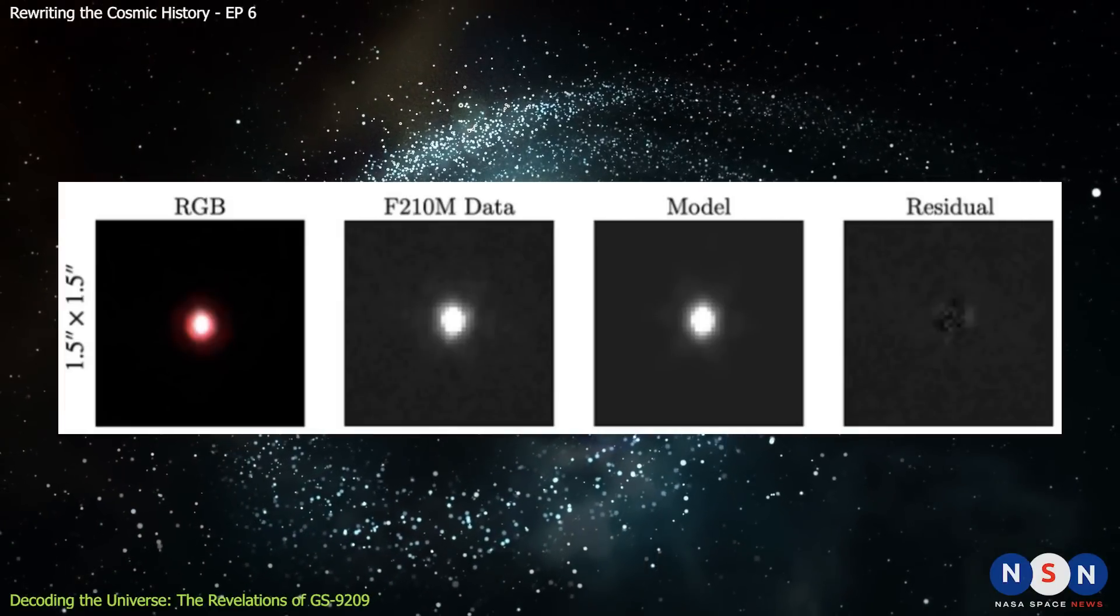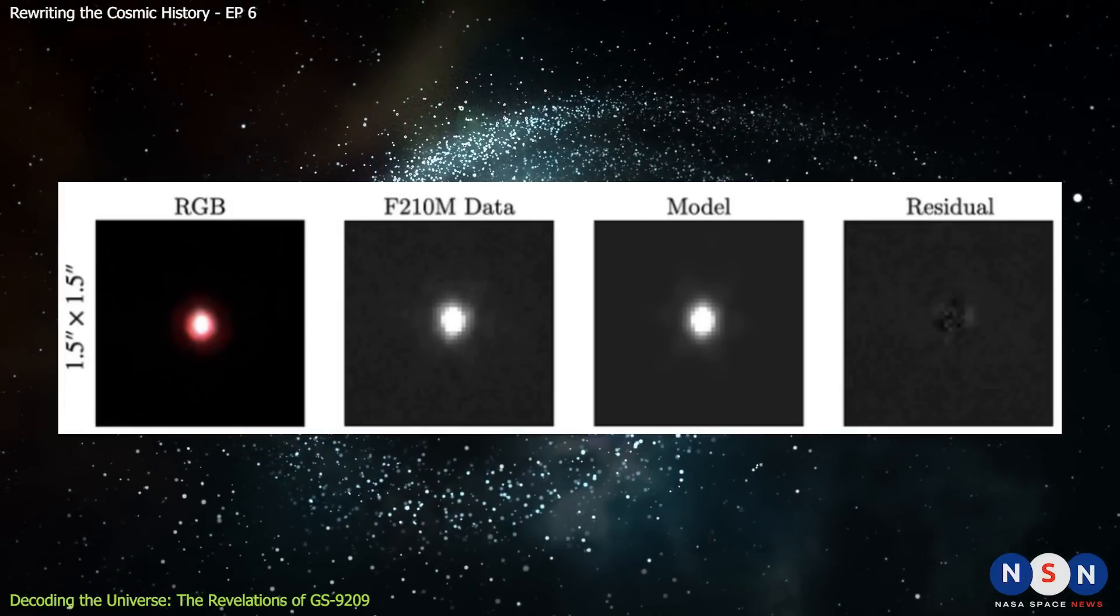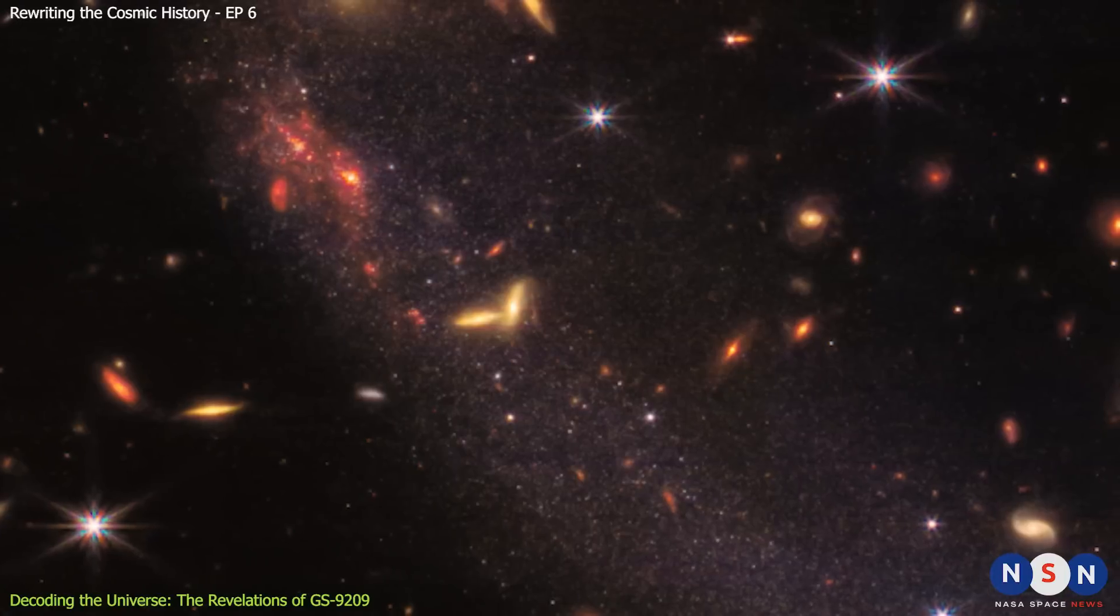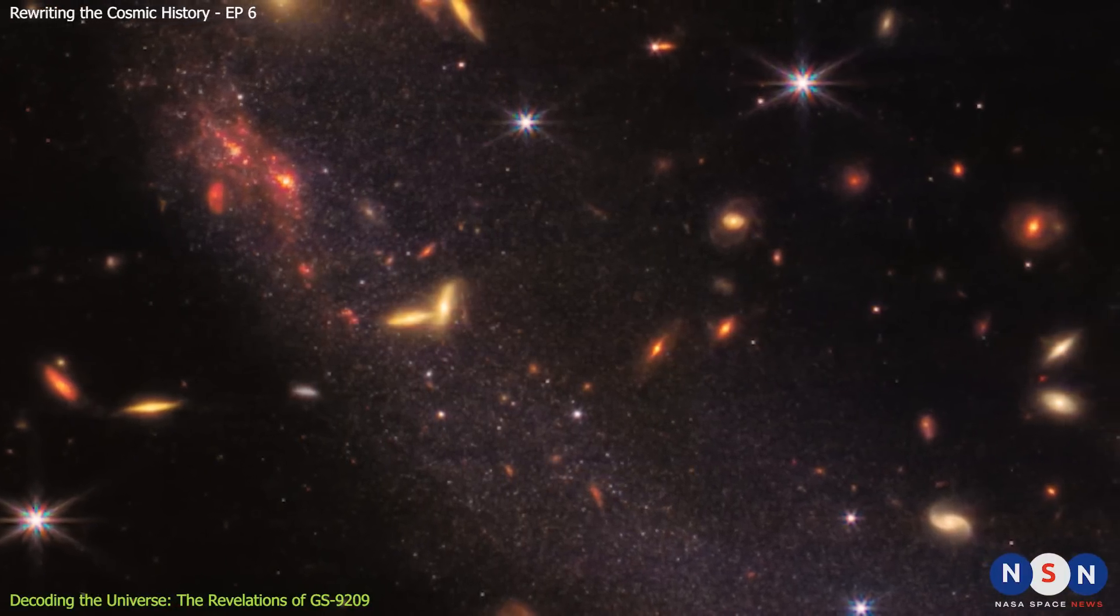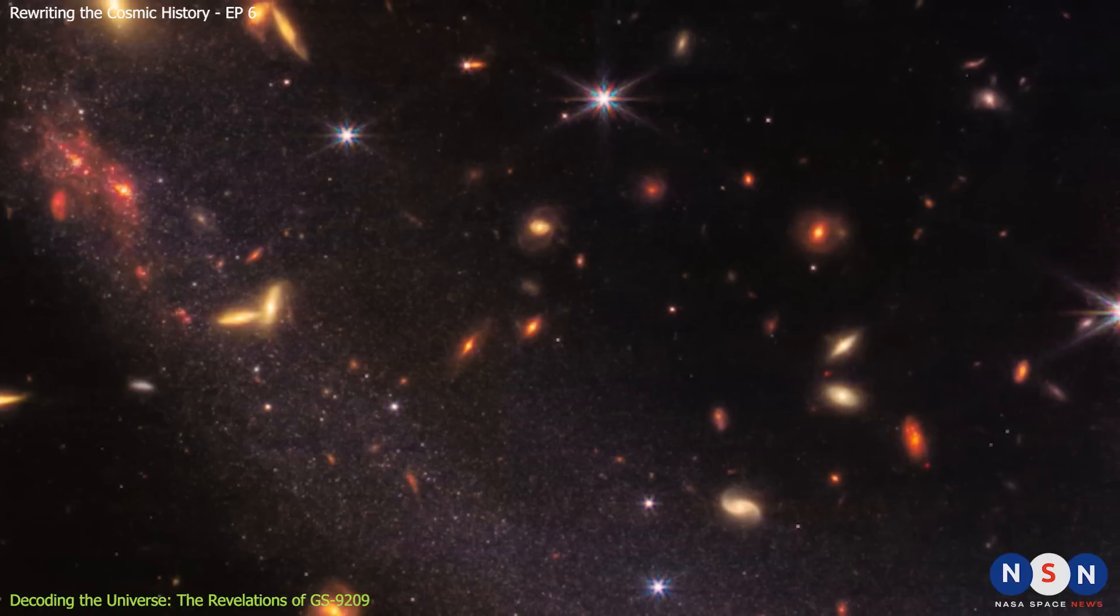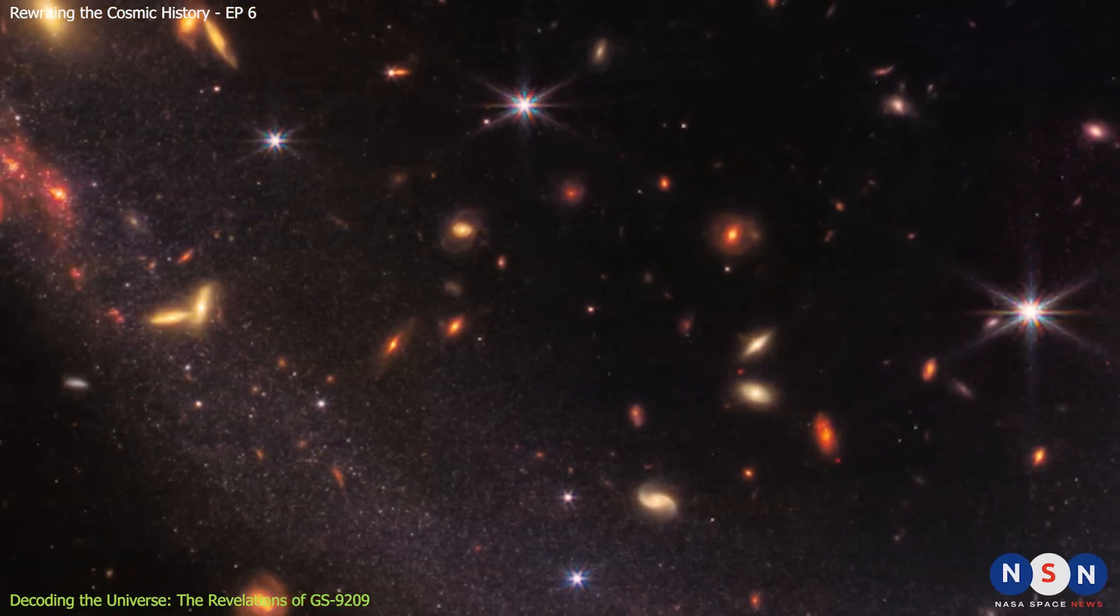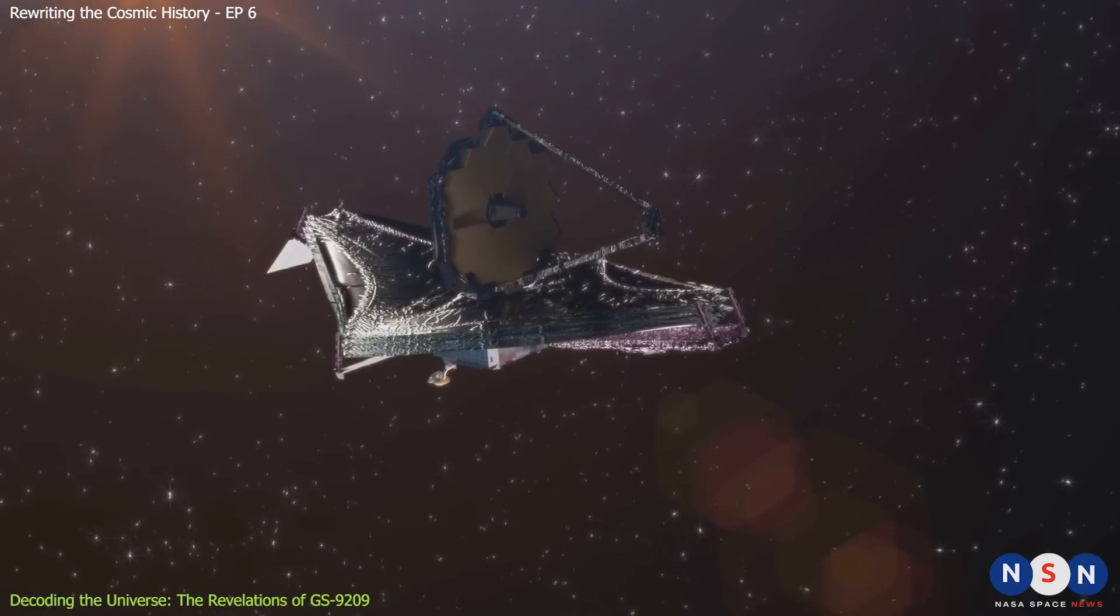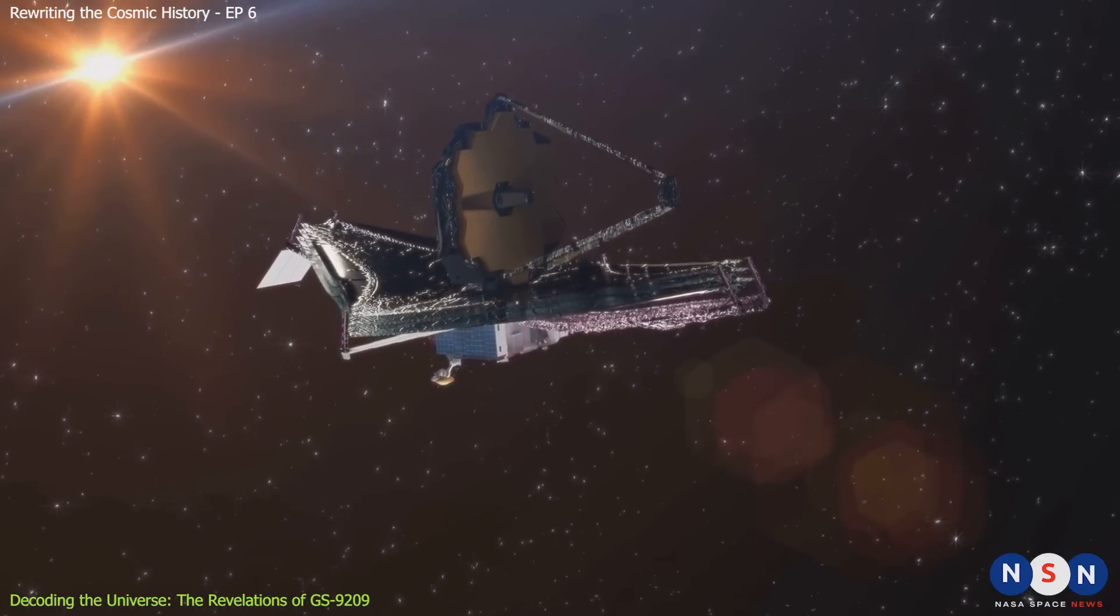These are some of the hypotheses that astronomers are testing to explain the existence of GS 9209, but they need more data and more observations to confirm or reject them. They also need to find more galaxies like GS 9209 to see how common or rare they are in the early universe. Luckily, James Webb is here to help them with that.